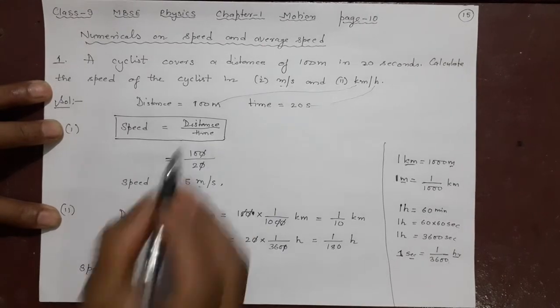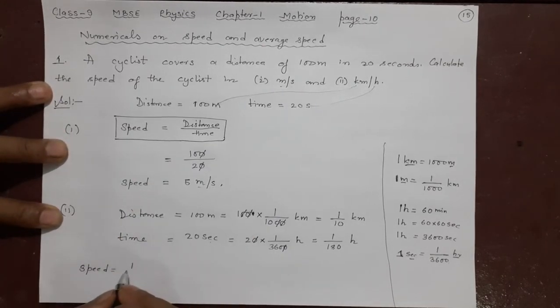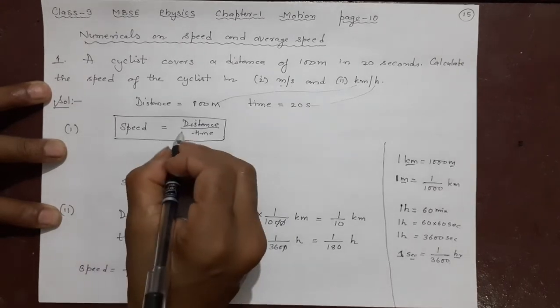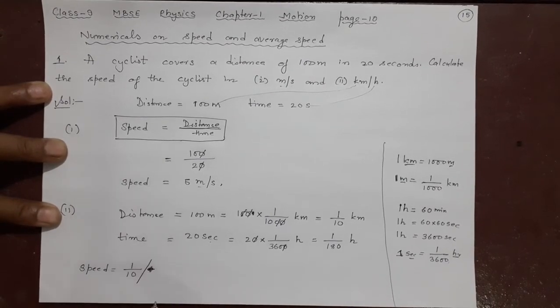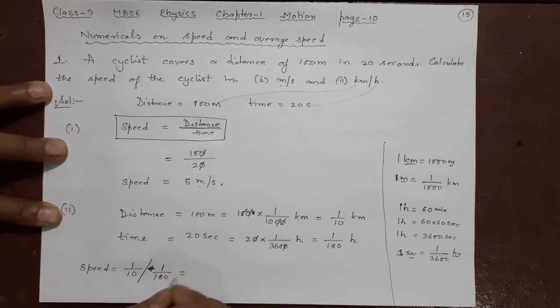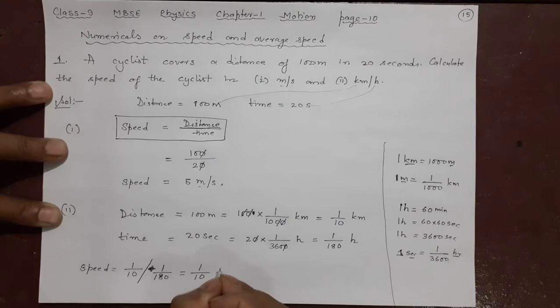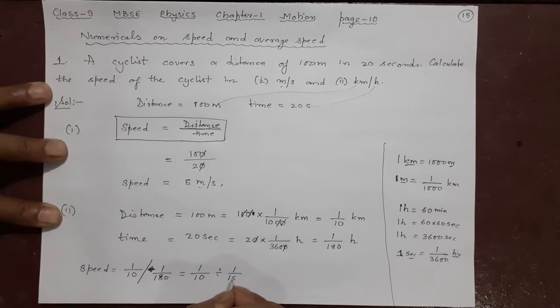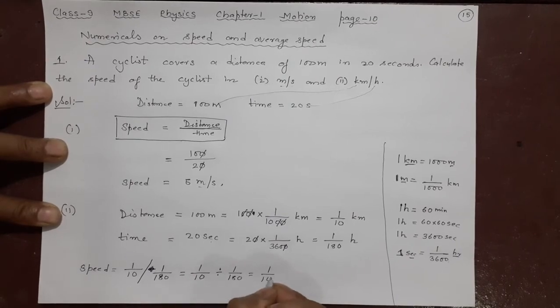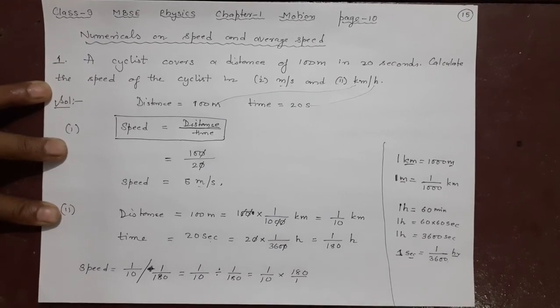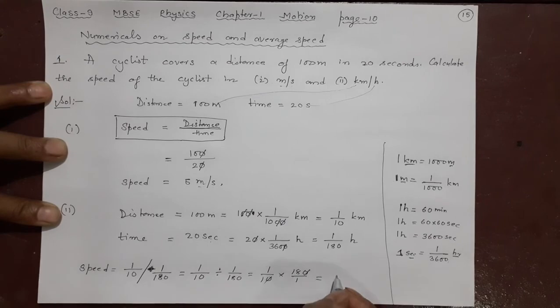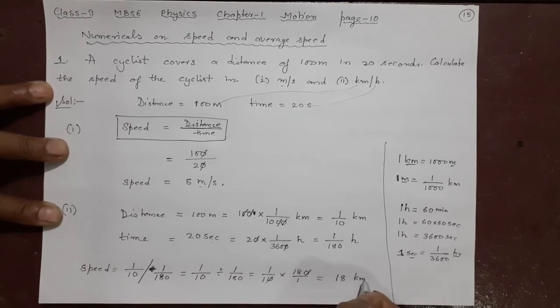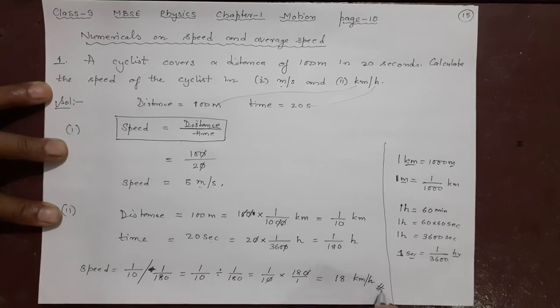Speed equals distance by time. Same formula. What is distance? 1 by 10 kilometers. Divided by what is time? 1 by 180 hours. There are fractions, so I am writing like this. 1 by 10 divided by 1 by 180. You understand why? So 1 by 10 divide means I can make it opposite: 1 by 10 into 180 by 1. Zero and zero cancel. 1 times 18 is 18, 1 times 1 is 1. So 18 by 1 is 18 kilometers per hour. This is the second answer.